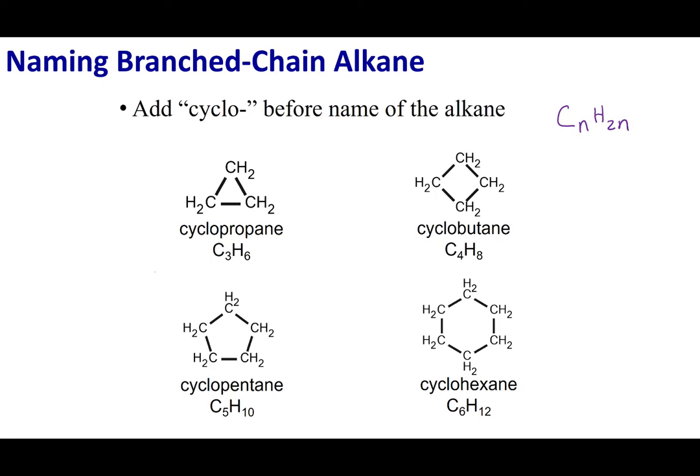Now, to name a cyclic compound, all you're going to do is count the number of carbons in the ring and then put cyclo in front of this. So what we have here, one, two, three carbons. So this is propane. If it's in a ring, cyclopropane.